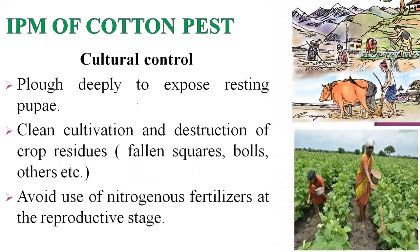The second practice is cultural control. Farmers perform deep plowing and weeding operations after harvest of the previous crop. Hibernating pest stages hidden in stubbles and soil are exposed by deep plowing, allowing abiotic and biotic factors to control the next generation. Clean cultivation is also used to disrupt crop residues, fallen squares, and bolls.